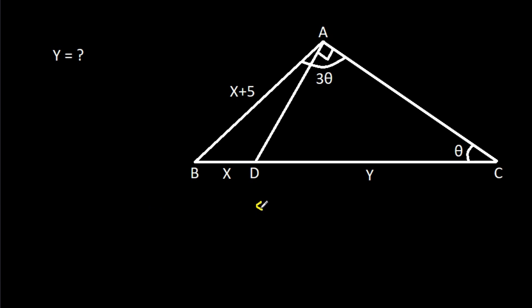We have CD is y and suppose the midpoint of CD is E. CE is equal to DE, this is our construction. Suppose CE is a and DE is a.